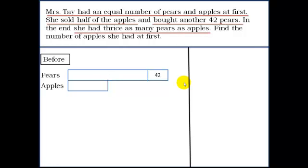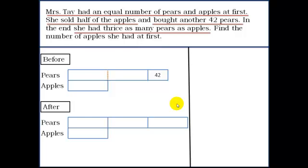So here we can indicate that by this particular line to show that this is what is the number of pears that is more than the number of apples. And the second part of the condition we represent it as an after condition. So we draw it like this because from the statement, she had thrice as many pears as apples, clearly shows that pears, we have three units for the pears and one unit for the apples, which can be shown by this diagram.